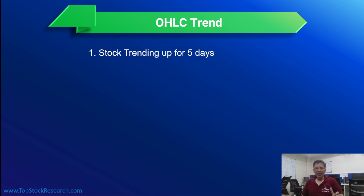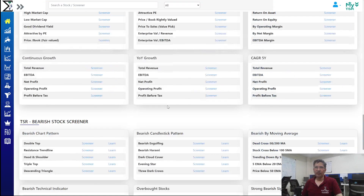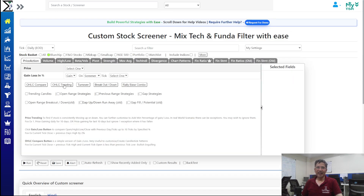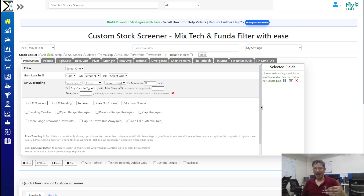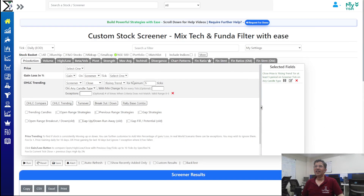In OHLC trending, the idea is to find the simplest filter based on user feedback. For a stock trending up — continuously moving in one direction — go to topstockresearch.com, navigate to the custom screener on the left-hand side, and you'll see OHLC Trending as an option. We look for stocks trending up for five days on a daily tick across a basket of 500 stocks. The default selection is close price, so the screener filters stocks whose close is continuously moving up for at least five ticks.